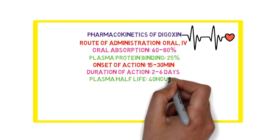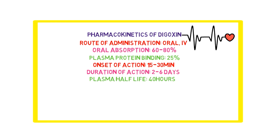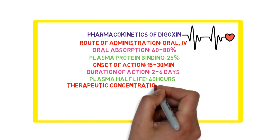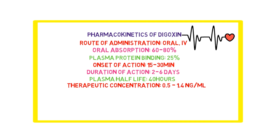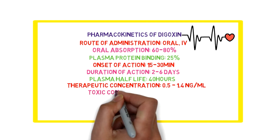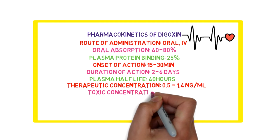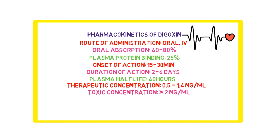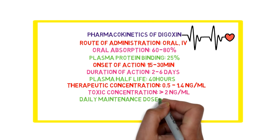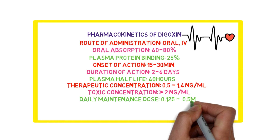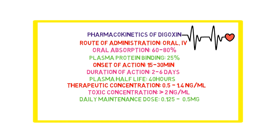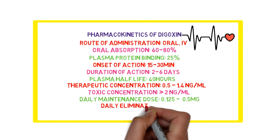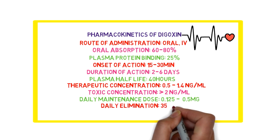The plasma half-life is 40 hours. The therapeutic concentration is between 0.5 to 1.4 ng per mL, and if this concentration goes above 2 it is a toxic concentration. The daily maintenance dose is 0.125 to 0.5 milligrams.